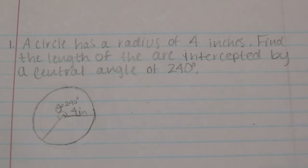A circle has a radius of 4 inches. Find the length of the arc intercepted by a central angle of 240 degrees.